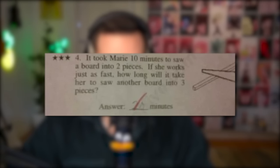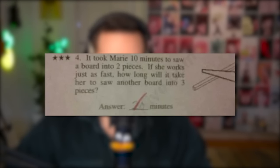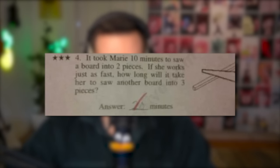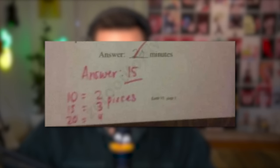Question 4: It took Marie 10 minutes to saw a board into 2 pieces. If she works just as fast, how long will it take her to saw another board into 3 pieces? So the answer given is 20 minutes, but that's wrong according to the teacher. The teacher says 15, because 10 is 2 pieces and 15 is 3 pieces. But the problem is that you only need to make 2 cuts to make it into 3 pieces.